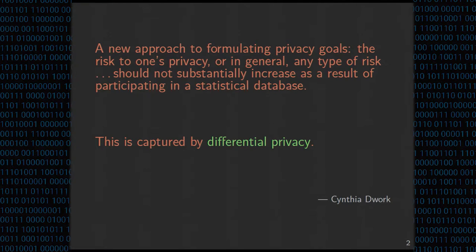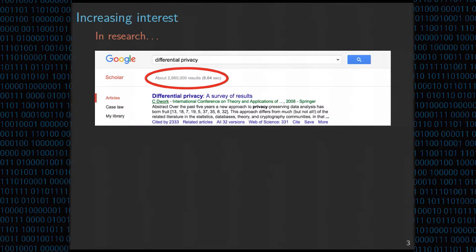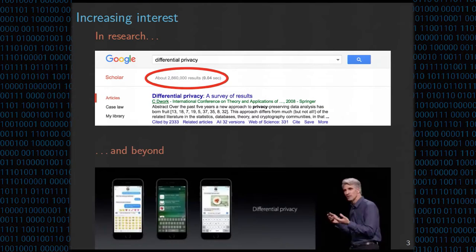In recent years, kind of since it was introduced in 2006, differential privacy has really attracted a lot of attention, both in research — there have been tons of papers written about this — and also beyond, as companies try to think about deploying this idea in practice.